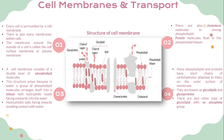Many phospholipids and proteins have a short chain of carbohydrates attached to them on the outer surface of the membrane. These are called glycolipids and glycoproteins, and there are also other types of glycolipids with no phosphate group. This is the structure of the cell membrane as explained.